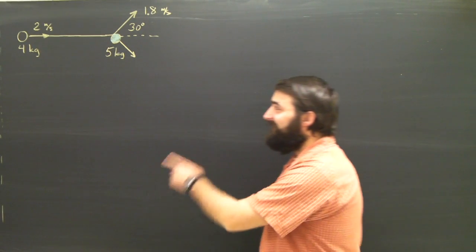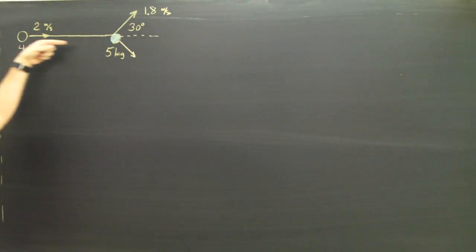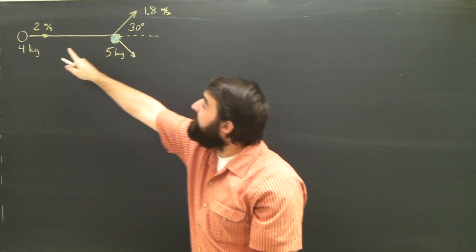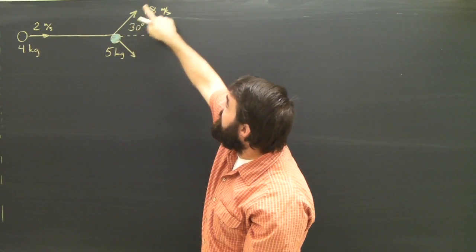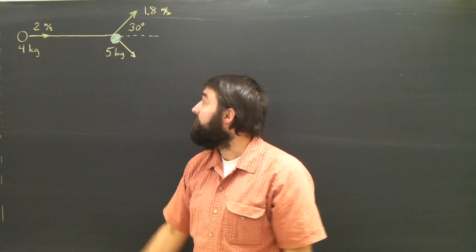So today we have a collision. Two objects are colliding. One object is 4 kilograms. It's moving to the right here and it hits the 5 kilogram object. The 4 kilogram object ends up moving at 1.8 meters per second, 30 degrees to the left of its previous course.